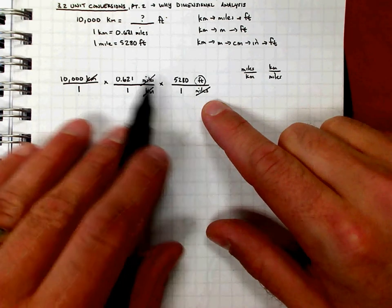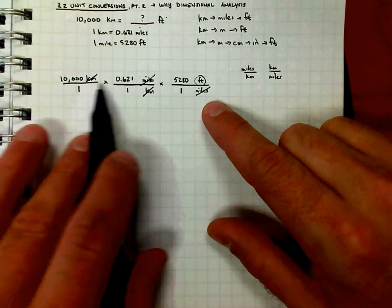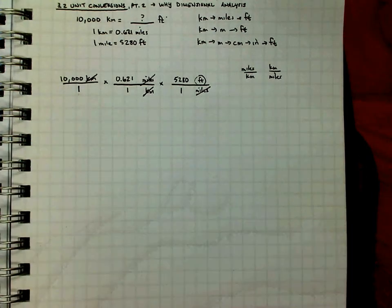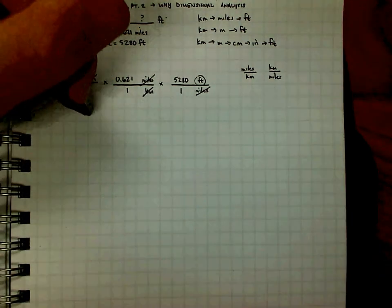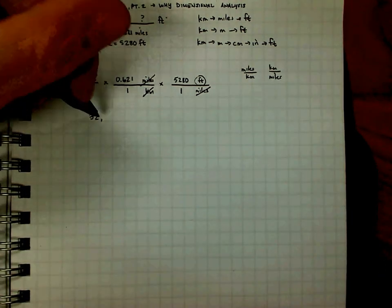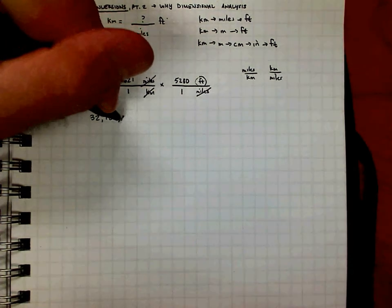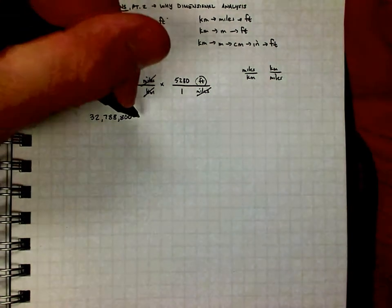So because they're all on top, in the last video I had a number on bottom, so I ended up dividing. On this one, they're all on top, so I'm just going to multiply straight out. And if I take 10,000 on my calculator times 0.621 and then times 5,280, what I get is a huge, huge number of 32,788,800 feet.